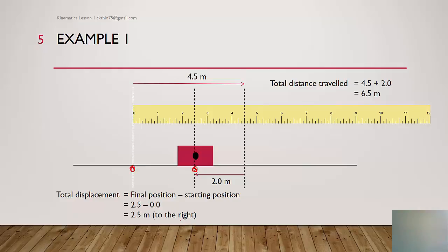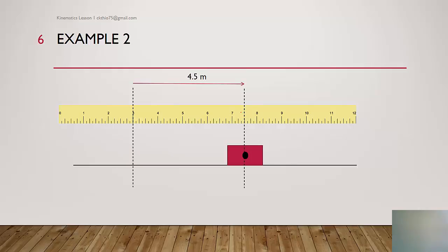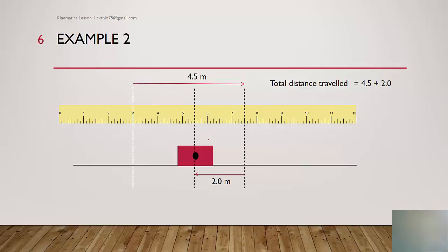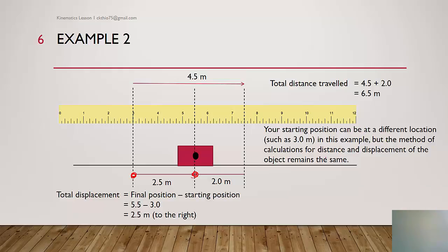It is important to understand that displacement contains two pieces of information: how far away and where. Using another example with a different starting position of 3 meters — the object moves to 7.5 meters, then comes back to 5.5 meters. The distance is still 4.5 plus 2, which is 6.5 meters. The displacement is the final position minus the starting position: 5.5 minus 3, giving 2.5 meters. The calculation method remains the same regardless of starting position.